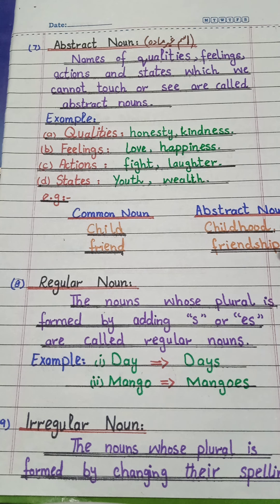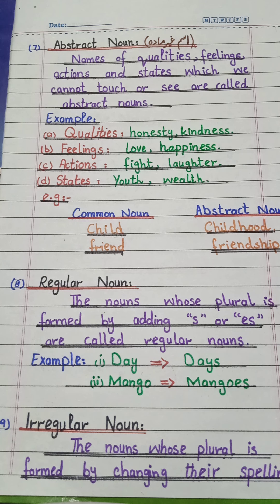How can we make a common noun into an abstract noun? First example: 'child' is a common noun, but 'childhood' is an abstract noun. Second example: 'friend' is a common noun, but 'friendship' is an abstract noun. We can touch a friend, but we can't touch friendship — we can only feel it.